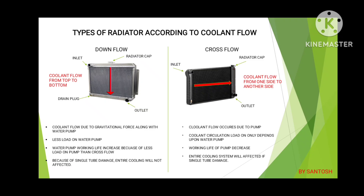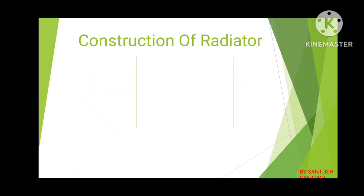According to coolant flow, we have two types of radiator: down flow and cross flow. You can see both types on screen. In down flow, coolant flows due to gravitational force along with the water pump. Because of gravity, the circulation load on the water pump is less, increasing its working life. Also, if a single tube is damaged, the entire cooling is not affected too much. In cross flow, coolant flows only due to the water pump, putting all the load on it, reducing working life, and making the system more affected by a single tube damage. Comparing both, down flow is much better than cross flow.